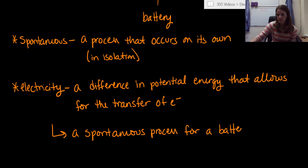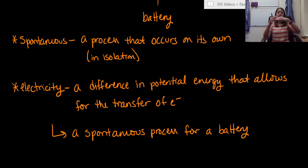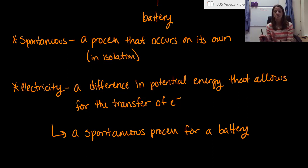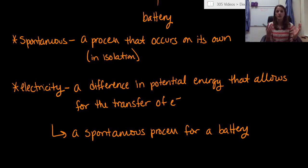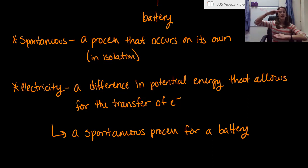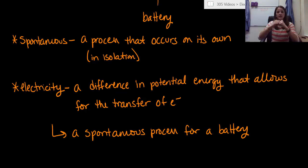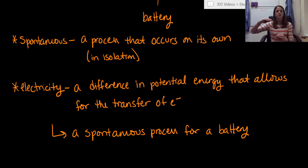A battery is an electrochemical cell, but it's specifically a galvanic cell because it is a spontaneous process that occurs on its own in isolation. We can easily transfer an electron from one system to another just because they have a difference in potential energy. You bring these systems close enough together and the electron wants to jump to a lower energy level — it is spontaneous.